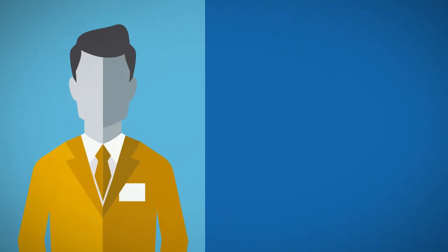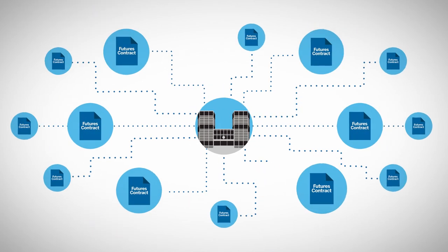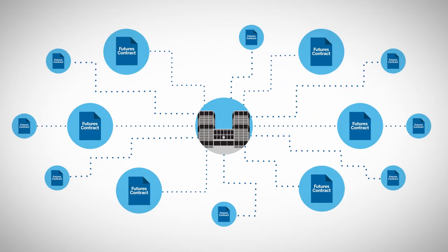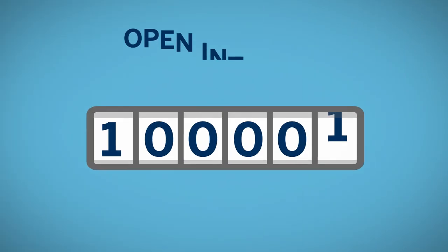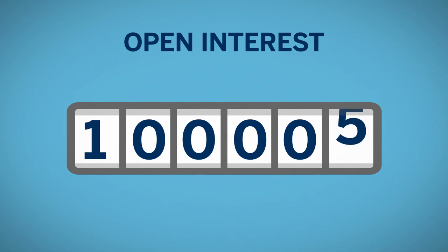Open interest is also an indicator used by futures traders to determine market sentiment and the strength behind price trends. Unlike the total issued shares of a company that typically remain constant, the number of outstanding futures contracts varies from day to day. Open interest is calculated by adding all the contracts from open trades and subtracting the contracts when a trade is closed.